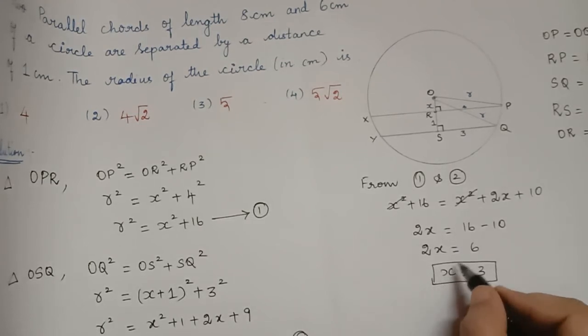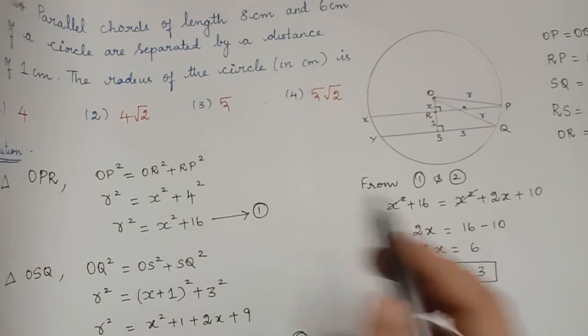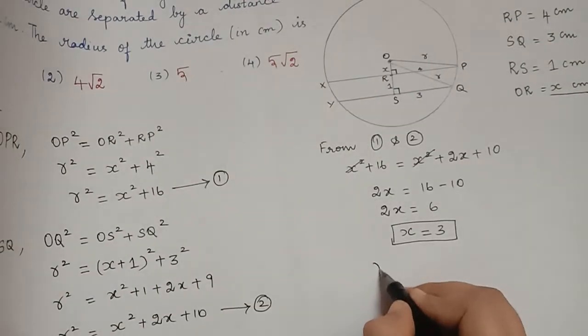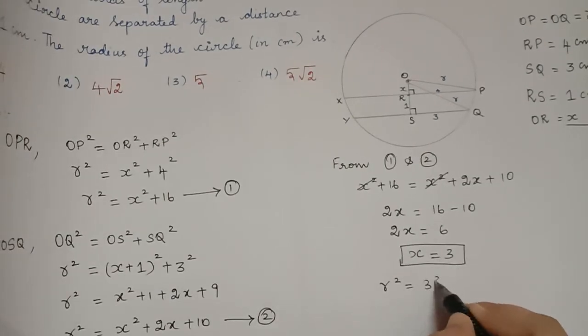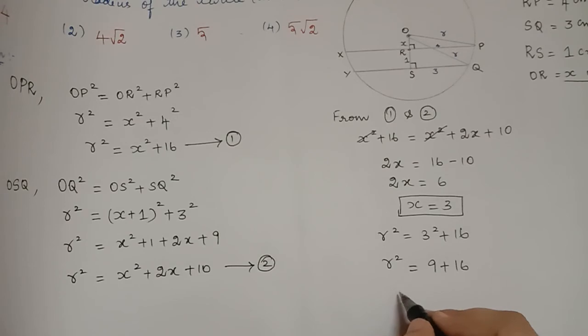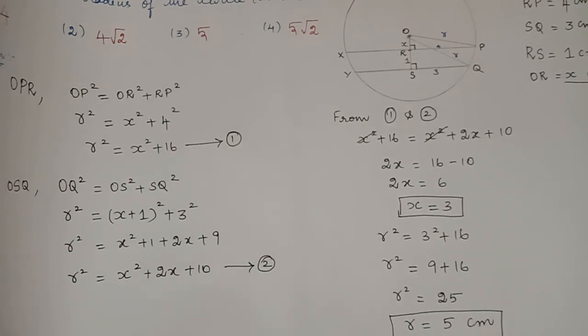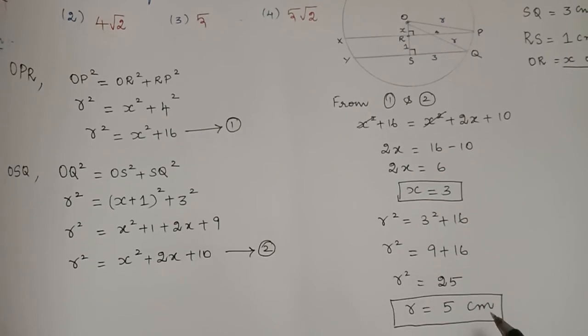Now, we shall substitute the value of X in equation 1. So, R square will be equal to X squared, so 3 squared plus 16. So, R square is equal to 9 plus 16. So, R squared is equal to 25 and so R is equal to 5 centimeter. The radius of the circle is 5 centimeter.